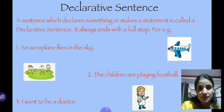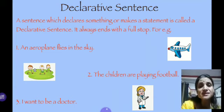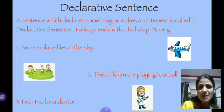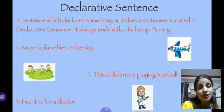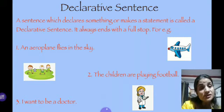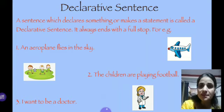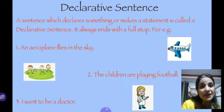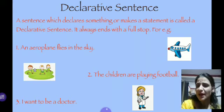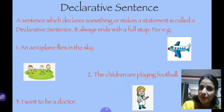What is a declarative sentence? A sentence which declares something or makes a statement — that kind of sentence is called a declarative sentence. You make many statements in your daily routine. It always ends with a full stop. Examples: 'An aeroplane flies in the sky.' 'The children are playing football.' 'I want to be a doctor.' These are examples of declarative sentences.